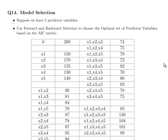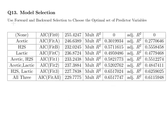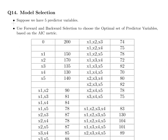In this presentation we're going to look at another model selection procedure. So what we have here is five predictor variables, x1 to x5. And what we're going to do is see how we can come up with an optimal set of predictor variables to model a response variable.